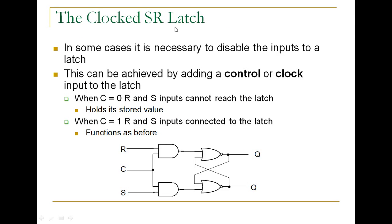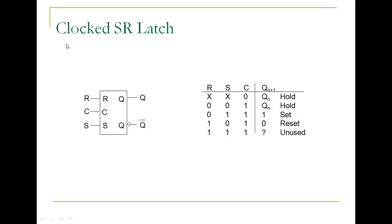Now we discuss the clocked SR latch. In some cases it is necessary to disable the inputs to a latch; this can be achieved by adding a controller clock input. When the clock is zero, R and S cannot reach the latch. When the clock is one, R and S are connected to the latch and function as before. This is the clocked SR latch symbol — the values remain the same, but at clock=0 a hold line is added.